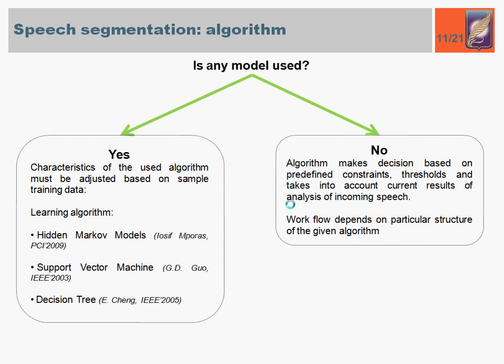All types of algorithms can be divided into two groups based on whether any prior information or models are used. Algorithms from the first group are so-called machine learning algorithms, such as hidden Markov models, support vector machines, and decision trees. Algorithms from the second group make decisions based on predefined constraints, thresholds, and current results of analysis of incoming speech.